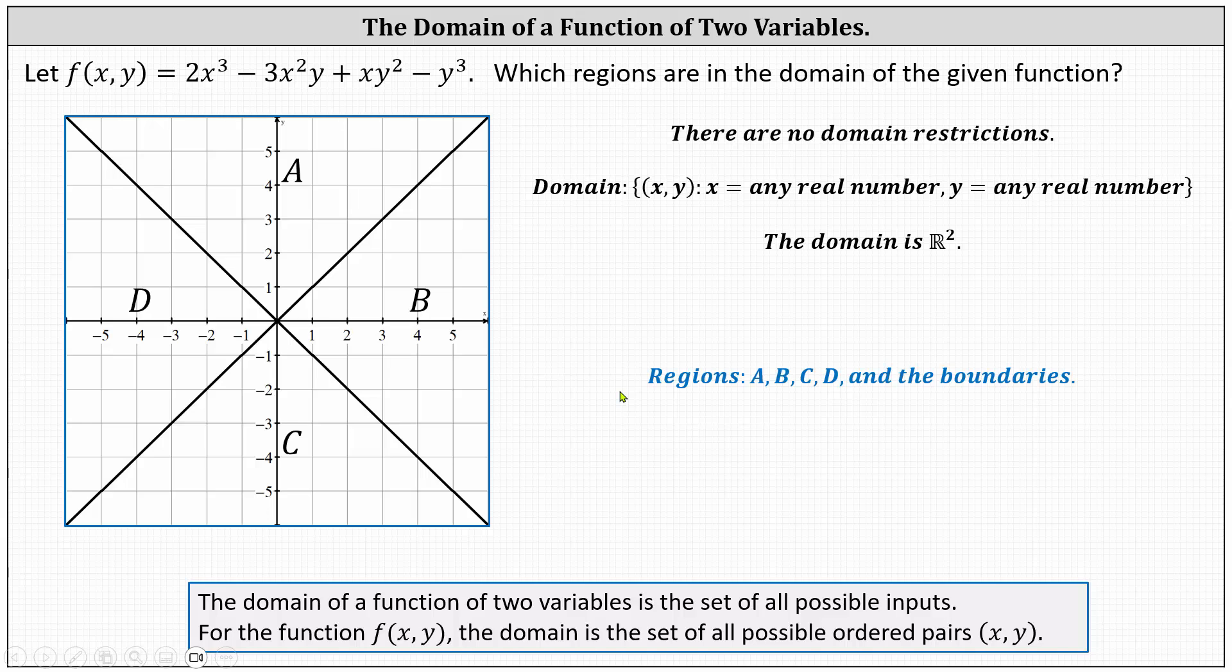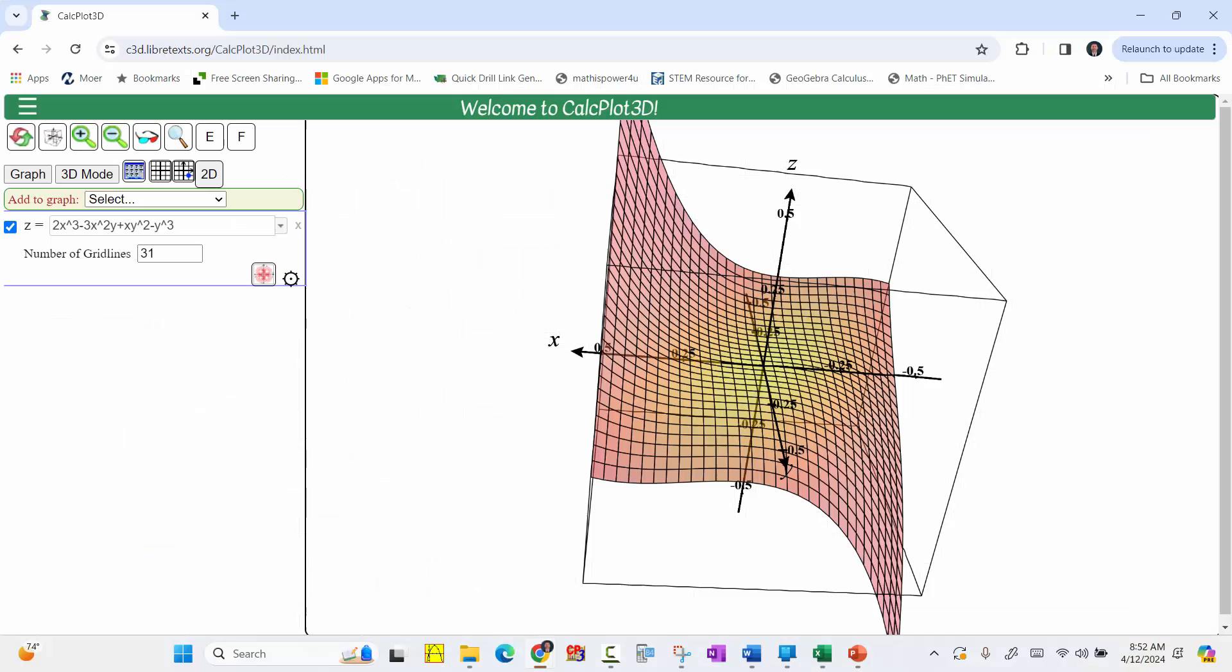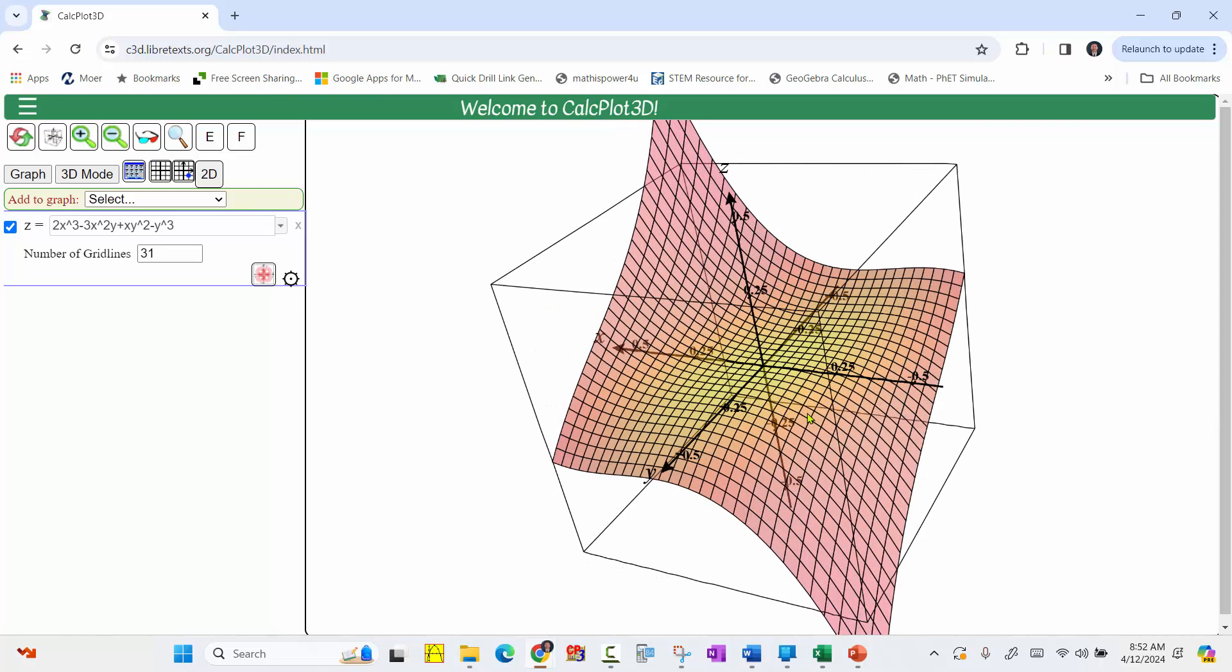Before we go, let's look at the graph of the given function. Here's the graph of the given function. Notice we don't have any holes, breaks, or vertical asymptotes, which does confirm there are no domain restrictions.